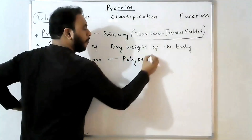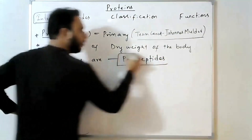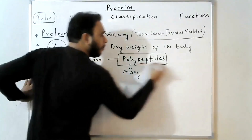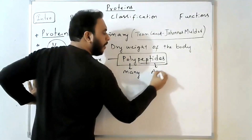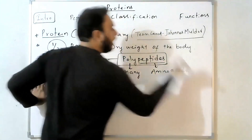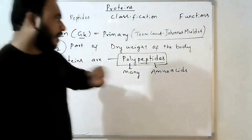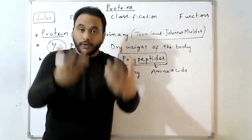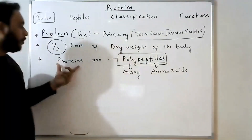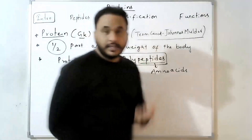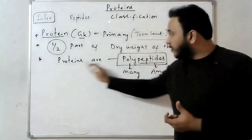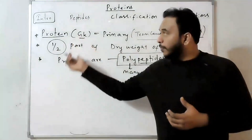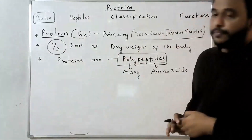Proteins are polymers of polypeptides. 'Poly' means many, and peptide refers to amino acids. These peptides form long chains, and these long chains constitute proteins. So proteins are considered as polypeptides — different polypeptide chains are present in the proteins. This is the introduction part.